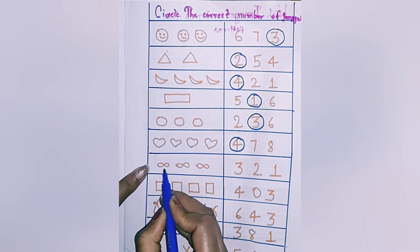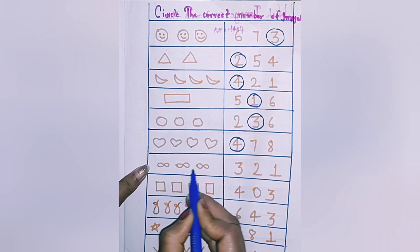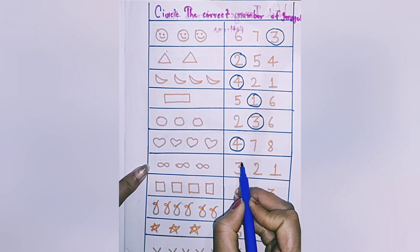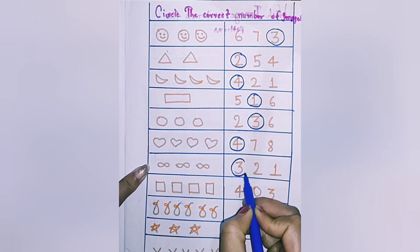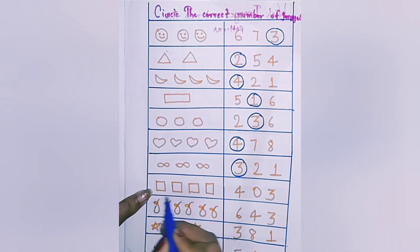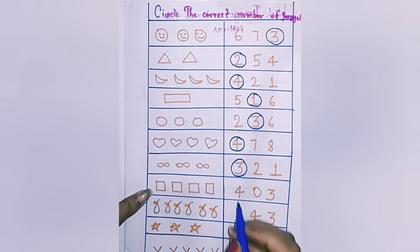How many infinity are there? One, two, and three — three. How many square are there? One, two, three, and four.